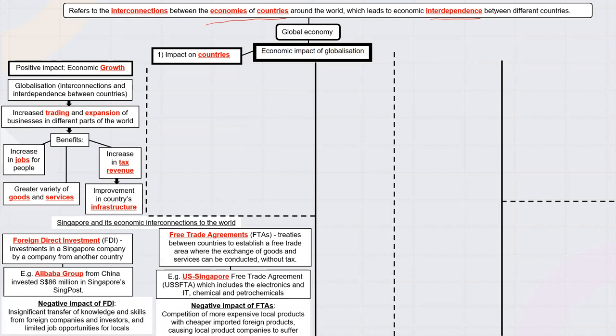At the country level, a positive impact is that the economy can grow. With globalization, countries are connected, there is more trade, businesses can expand, and there can be more jobs. When businesses come to the country, the government can collect tax from them — like in the Dyson case study, if Dyson comes to Singapore the government gets more revenue. People also get to enjoy goods and services from all over the world, like McDonald's, Starbucks, and Dyson, which can improve our lives.